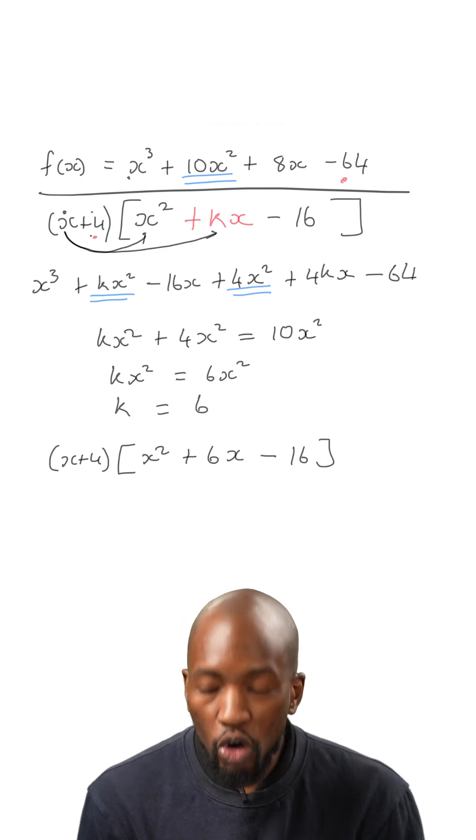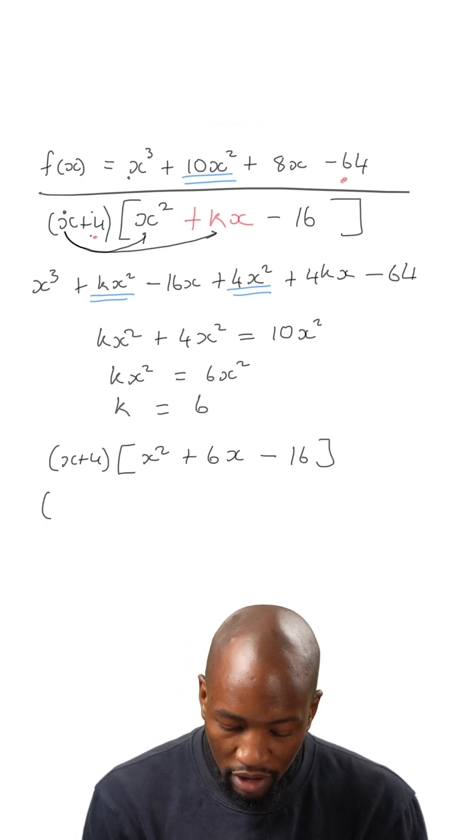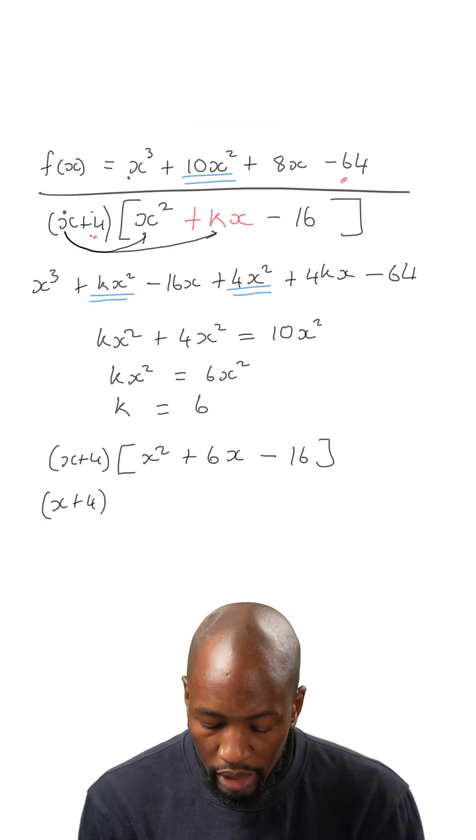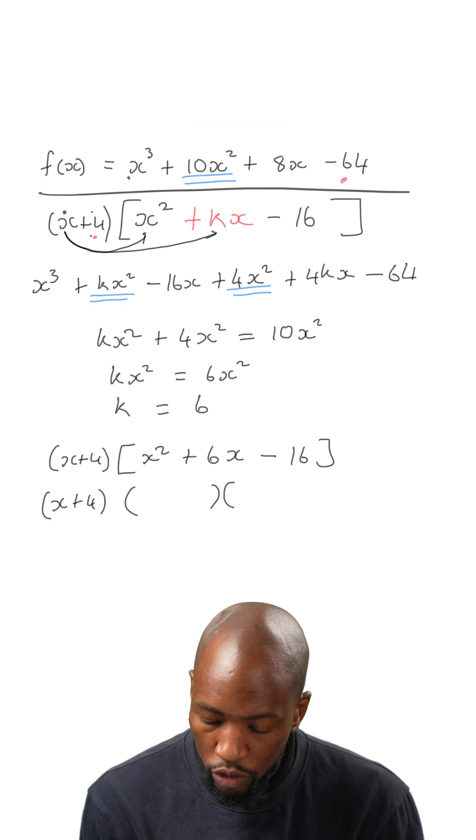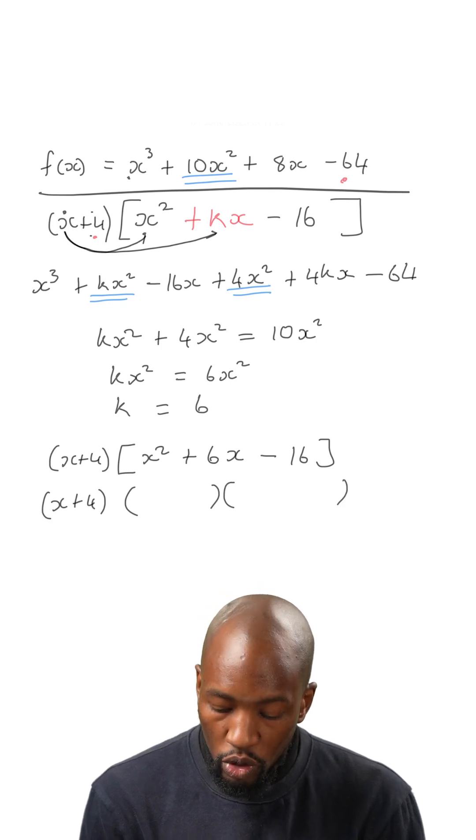Now this is a beautiful trinomial that we can factorize. We still have x plus 4 outside. Then in the block bracket, let's factorize that. We know we're going to have two empty brackets. And then because we have positive and negative, our brackets are going to take positive and negative.